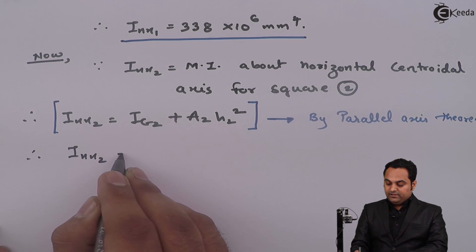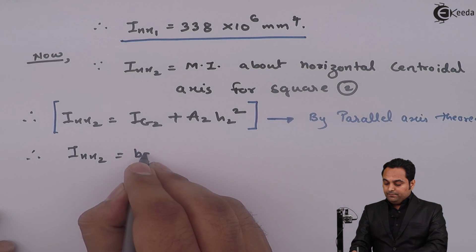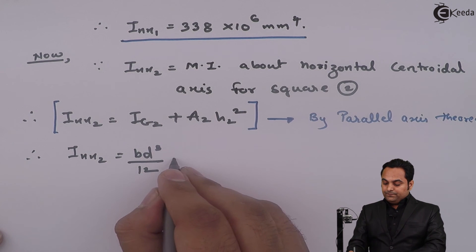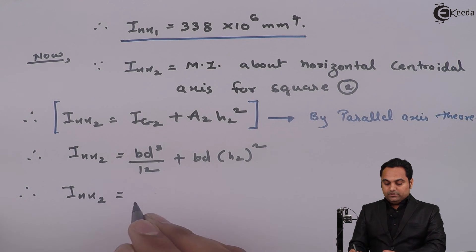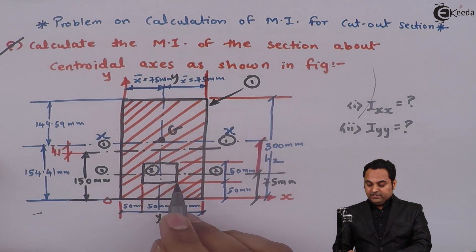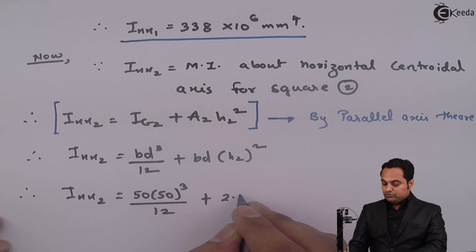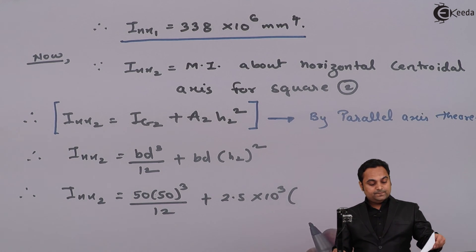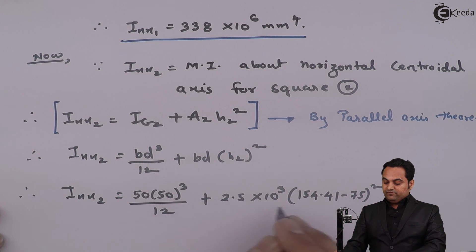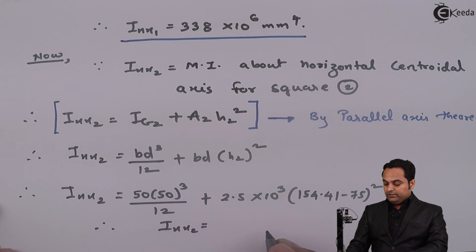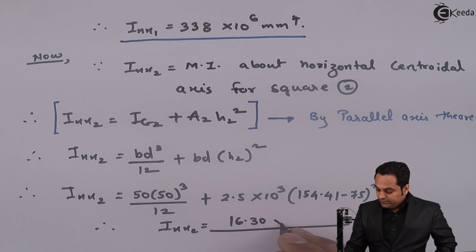For the square, the MI about its horizontal axis is also bd³/12. Therefore I_xx2 = (50 × 50³)/12 + (2.5 × 10³) × (154.41 − 75)². Here b = 50 mm and d = 50 mm for the square, and area = 2.5 × 10³ mm². Calculating this throughout, I_xx2 comes out to be 16.30 × 10⁶ mm⁴.